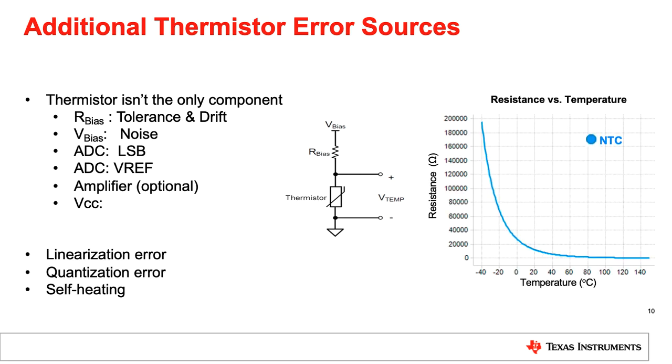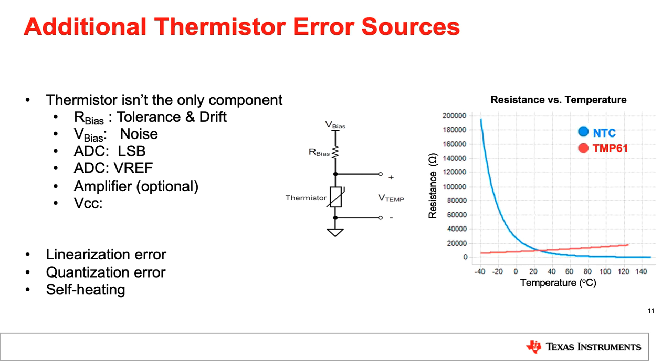The natural curvature of the NTC creates the next set of challenges in determining the measurement accuracy. Its nonlinear nature introduces additional mathematical error in the resistance to temperature conversion. Also at high temperature, the slope flattens significantly, posing a challenge for the ADC. A NTC's lack of sensitivity in this range results in a loss of resolution for the ADC, thus contributing to quantization error in the measurement. However, these contributing errors can be minimized with a linear thermistor such as TI's TMP-61 family. For more information on ADCs and amplifier error, please be sure to check out the Precision Lab series on those as well.